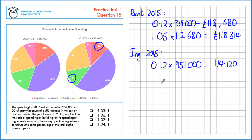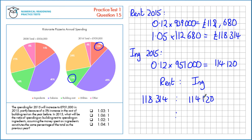Now let's form the ratio. We have rent to ingredients: the rent is £118,314 and the ingredients is £114,120. To simplify this, we'll divide by the smaller number. This divided by itself is 1, and this divided by the ingredients is 1.04. So it's 1.04 to 1.